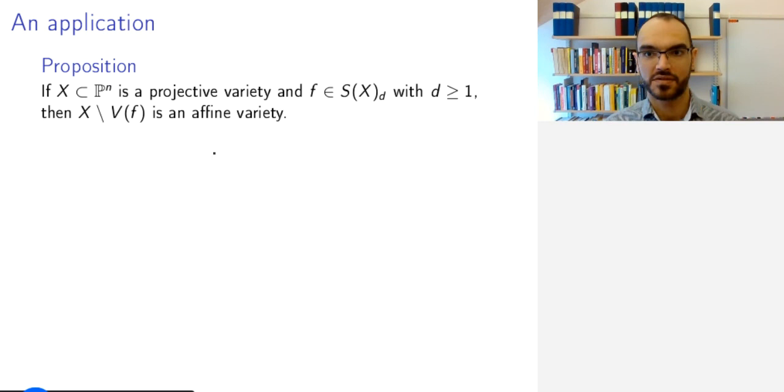So this means that from a projective variety you get an affine variety just by removing zeros of one non-constant homogeneous polynomial. This can be proved in three short steps.